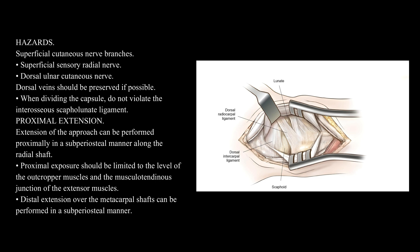Proximal extension: extension of the approach can be performed proximally in a subperiosteal manner along the radial shaft. Proximal exposure should be limited to the level of the outcropper muscles and the musculotendinous junction of the extensor muscles. Distal extension over the metacarpal shafts can be performed in a subperiosteal manner.